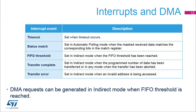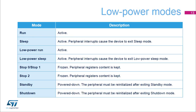The Quad SPI memory interface has five interrupt sources: time out, status match — when the masked received data matches the corresponding bits in the match register in automatic polling mode — FIFO threshold, transfer complete, and transfer error. DMA requests can be generated in indirect mode when the FIFO threshold is reached. The Quad SPI memory interface is active in Run, Sleep, Low Power Run, and Low Power Sleep modes.